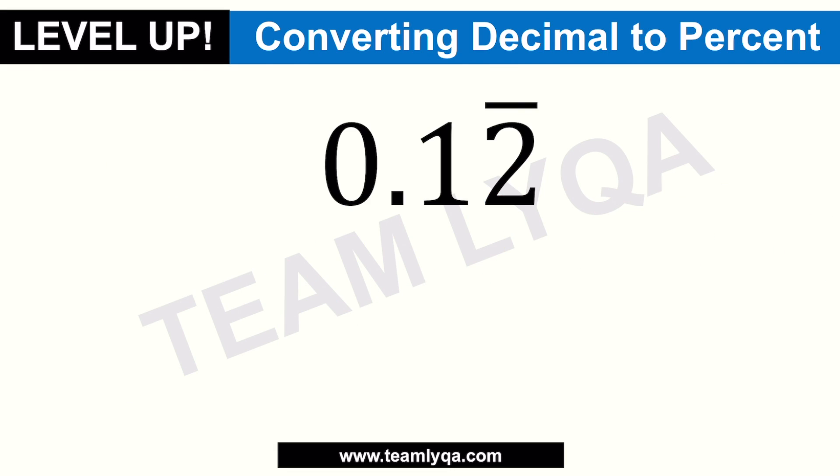Next, we're going to convert decimals to percentage, but this time we have a repeating number. When we say repeating decimal, it has a bar on top. We already have a discussion on converting repeating decimals to fractions — linked in the description. But what it means is that the digit repeats — you can write it over and over.